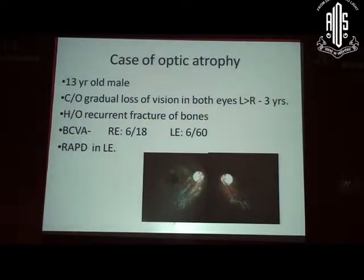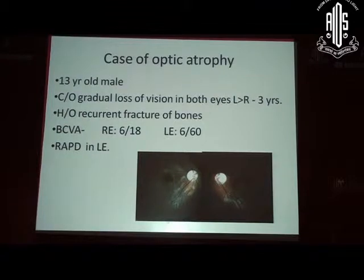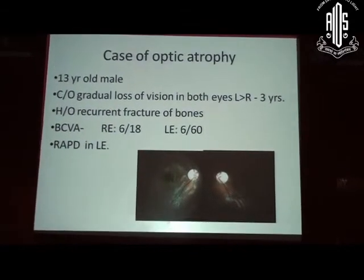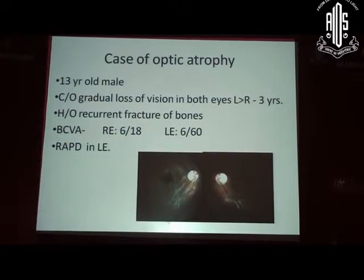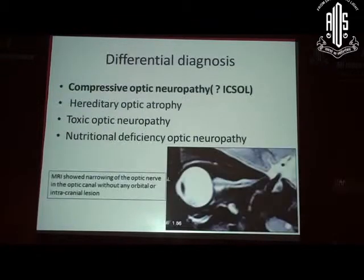We had this case of optic atrophy — a 13-year-old male who came with gradual progressive loss of vision in both eyes for the past 3 years. There was a recurrent history of multiple fractures incidentally picked up. Vision was 6/18 in the right eye and 6/60 in the left eye, with a left afferent pupillary defect. So bilateral primary optic atrophy — you are thinking of compressive lesions, toxic causes although there was no history of toxic intake, and hereditary optic neuropathy. Whenever thinking along these lines, rule out toxic causes and get imaging done. Compressive optic neuropathy from a space-occupying lesion in the sellar area becomes the most important differential.